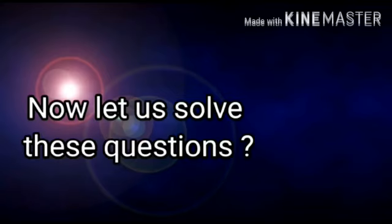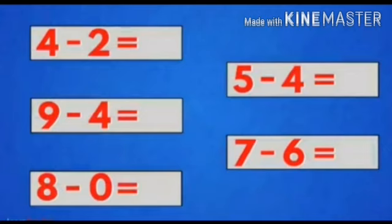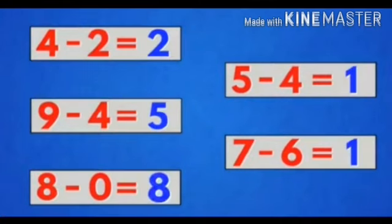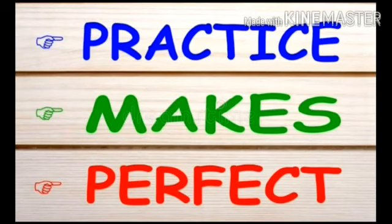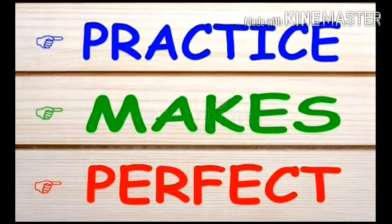Now let us solve these questions. Four minus two is equal to how much? You can use your fingers — take out four fingers, put down two, and you get the answer two. Nine minus four is equal to five. Eight minus zero is equal to eight — you get the same answer because zero is given. Five minus four is equal to one. Seven minus six is equal to one. Hope you all understood — do practice nicely and neatly. Practice makes perfect. Stay safe and stay healthy. Bye.